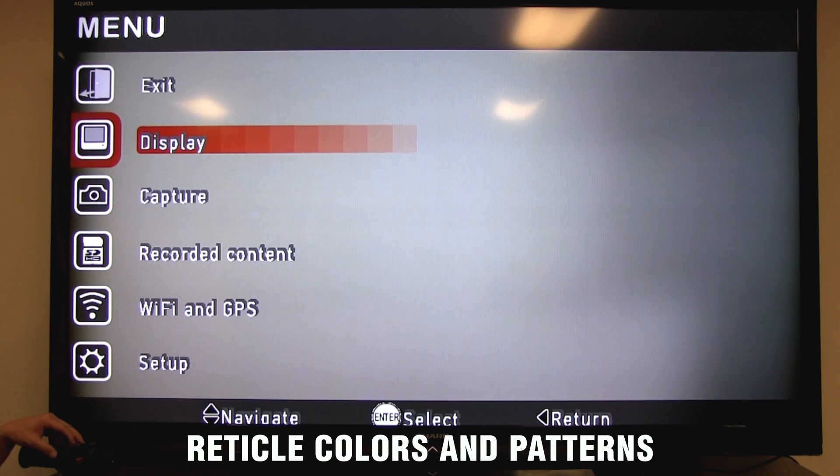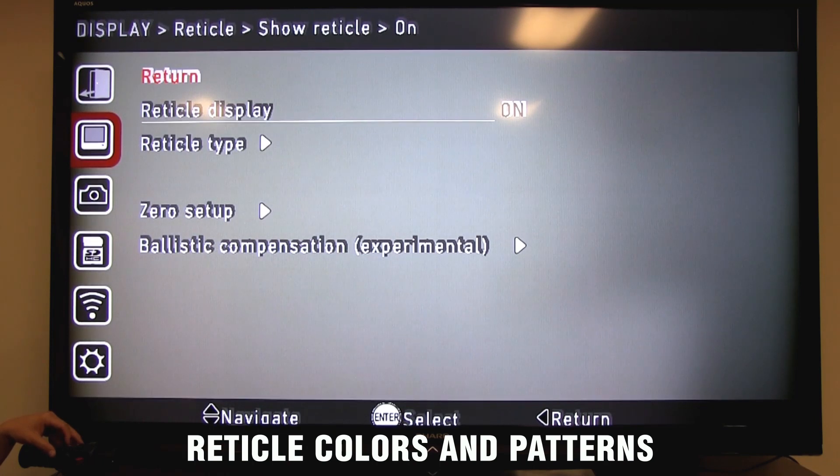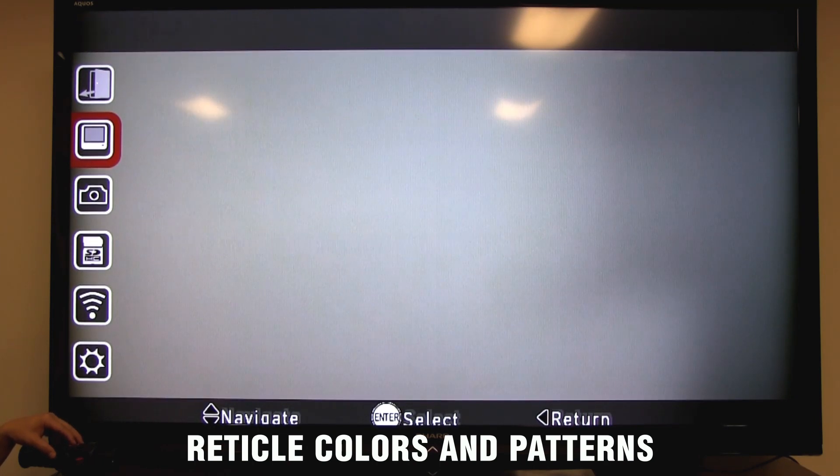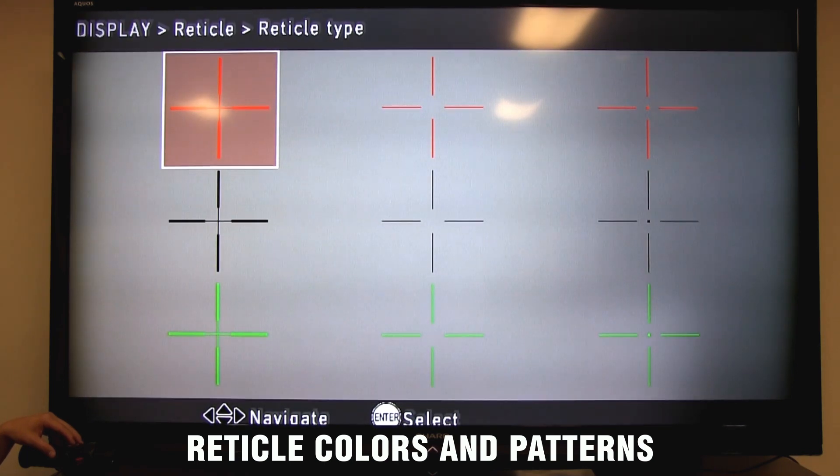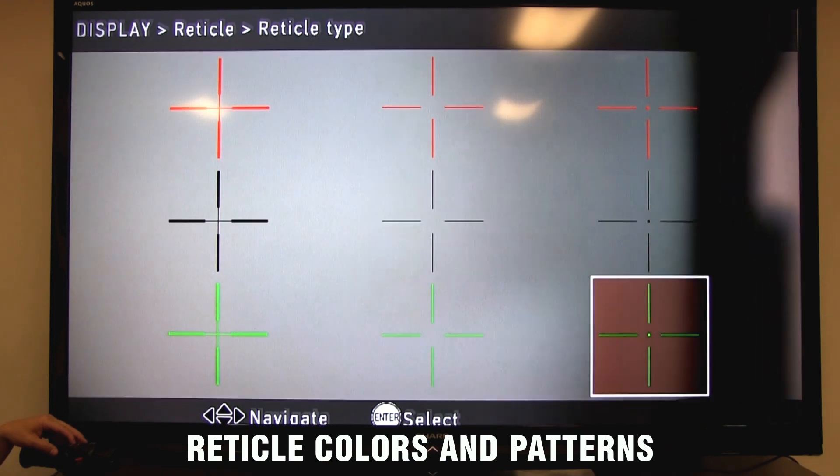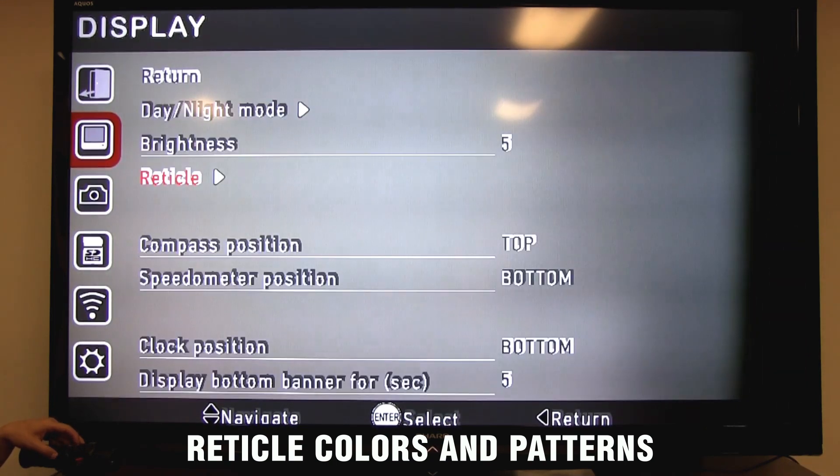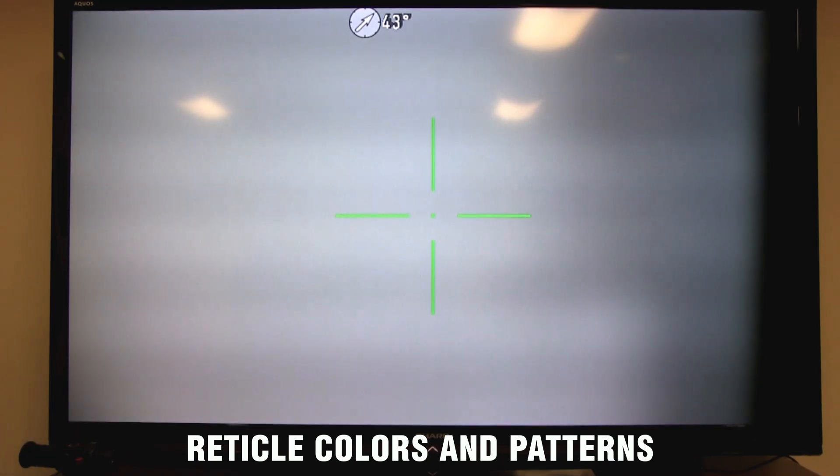Move to display menu. Press enter. And move to the reticle menu and press enter. Finally, move to your reticle type and press enter. Which will bring up the menu and your selection of reticle patterns and reticle colors. Simply select the reticle pattern or color that you want. Press enter. Use the left arrow to back out of the menus and you've got your new reticle color and pattern.